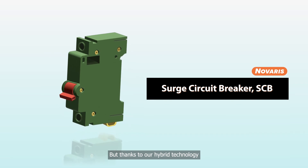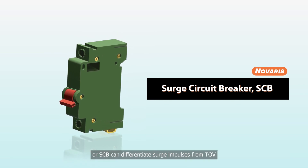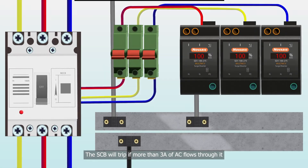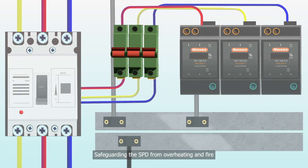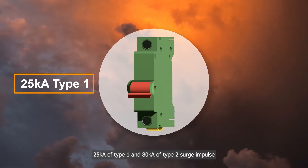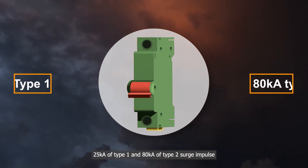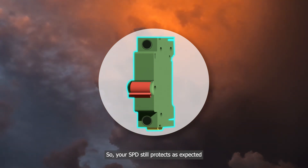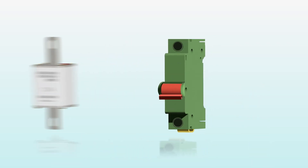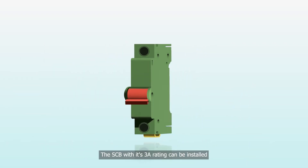But thanks to our hybrid technology, the Novaris Surge Circuit Breaker, or SCB, can differentiate surge impulses from TOV. The SCB will trip if more than 3A of AC flows through it, safeguarding the SPD from overheating and fire. It has a built-in surge element that can pass through up to 25kA of Type 1 and 80kA of Type 2 surge impulse, so your SPD still protects as expected. Installation only requires small conductors, since 3A is the maximum AC rating of the SCB. The SCB with its 3A rating can be installed in any switchboard and will still comply with the wiring rules.